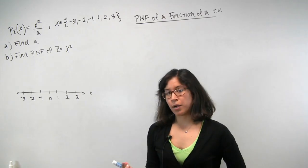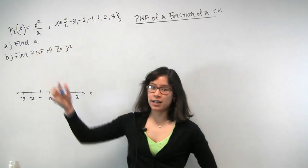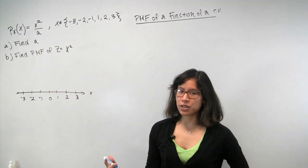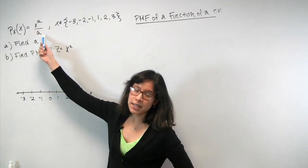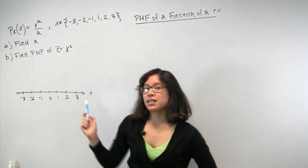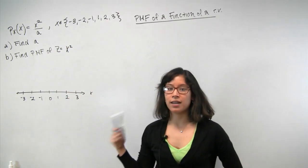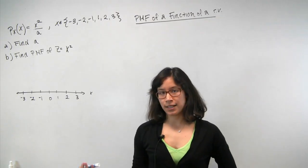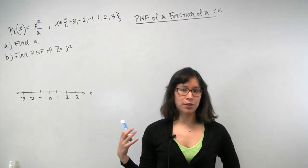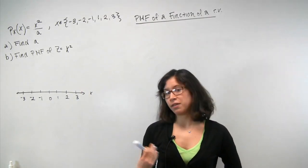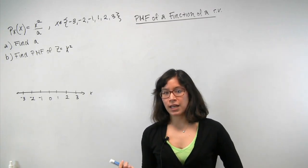Now, we're asked to do two things in the problem. The first is to find the value of the parameter a. And that's sort of a natural question to ask, because if you think about it, the PMF isn't fully specified. And in fact, if you plug in the wrong number for a, you actually won't get a valid PMF. So we'll explore that idea in the first part. And then in the second part, you're given a new random variable called z. And z happens to be a function of x. In fact, it's equal to x squared. And then you're asked to compute that PMF.